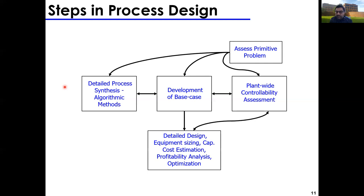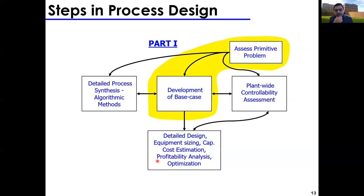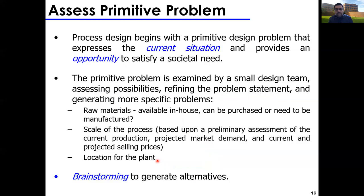Finally, once happy with all of this, you move to the detailed design, which involves equipment sizing, cost estimation, profitability analysis, and optimization. In this course we'll cover equipment sizing and cost estimation — you should be able to assess how big a reactor or distillation column is, whether a five-billion-dollar plant cost estimate is competitive, and use these assessments in your overall process design decisions. Part one always begins with assessing primitive problems and developing a base case.